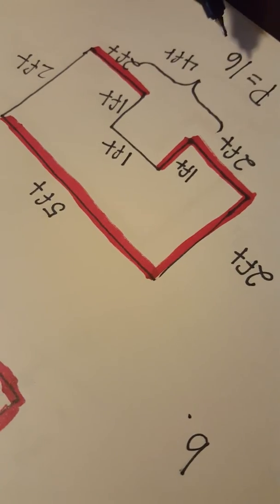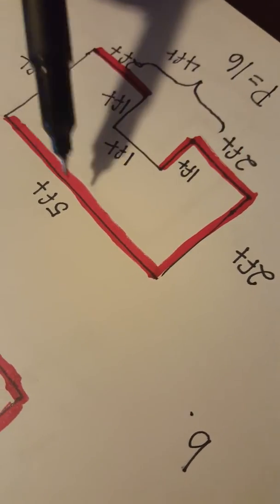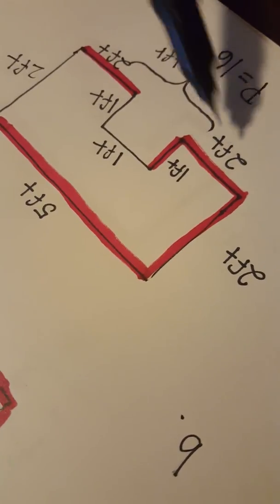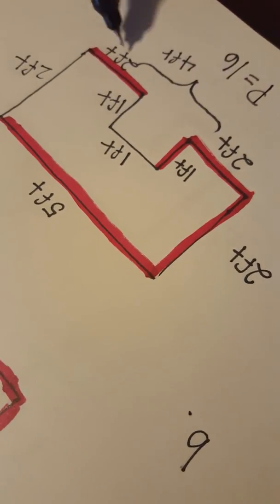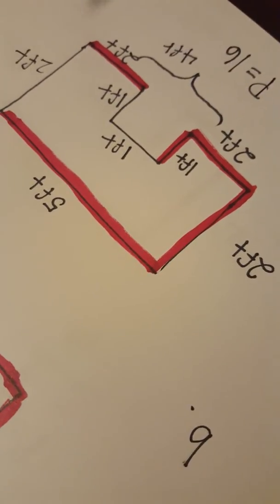And that'll give us our perimeter of 16. Let's make sure. 5, 6, 7, 8, 9, 10, 11, 12, 13, 14, 15, 16. We are correct in our measurements.